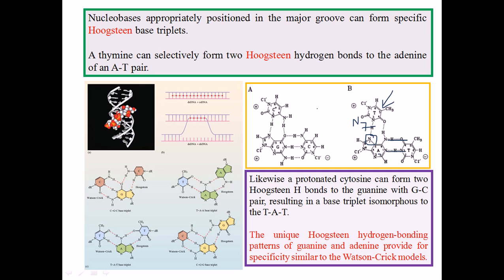The same bonding pattern applies for guanine and cytosine. Now, consider a simple duplex structure: as we know, it has a major groove and a minor groove in a helical arrangement. When we add a third strand to this DNA, that strand is going to interact with the major groove of the DNA, engaging to form hydrogen bonds from the major groove side, ultimately forming a compact triple-stranded structure.